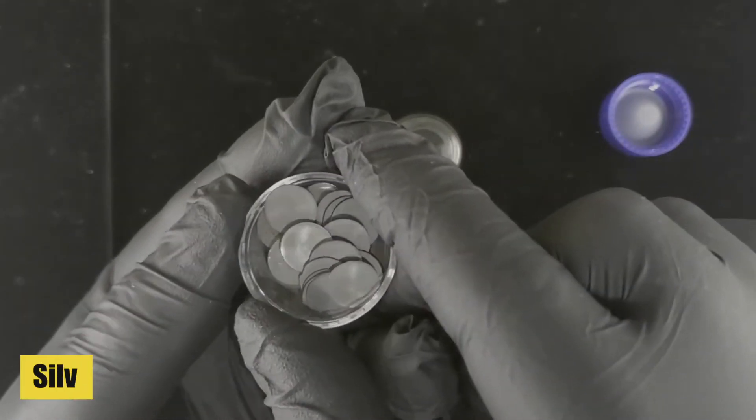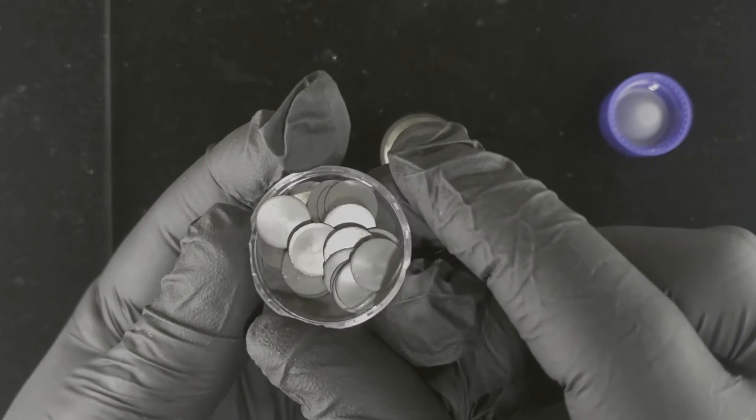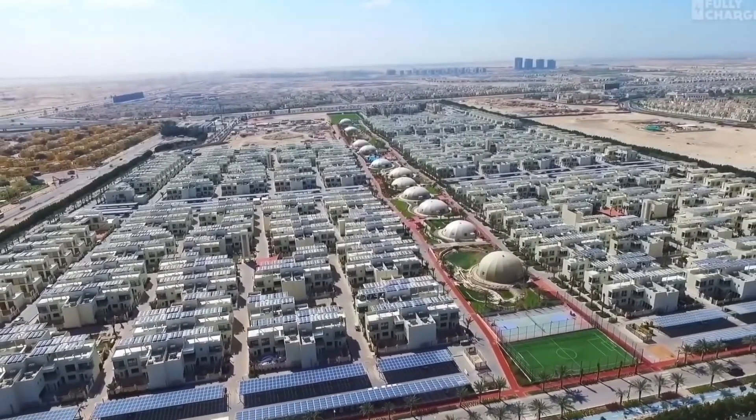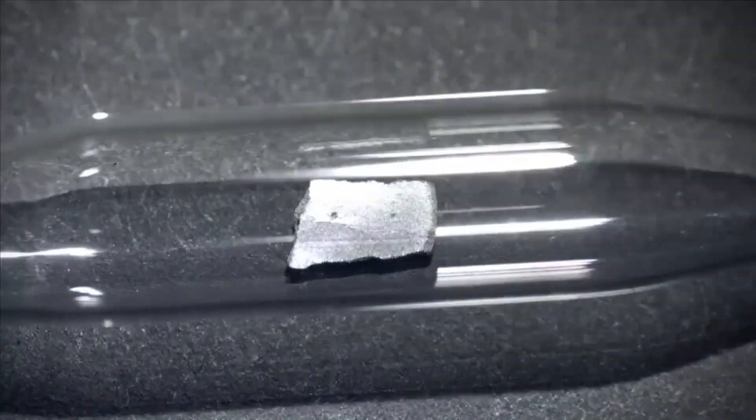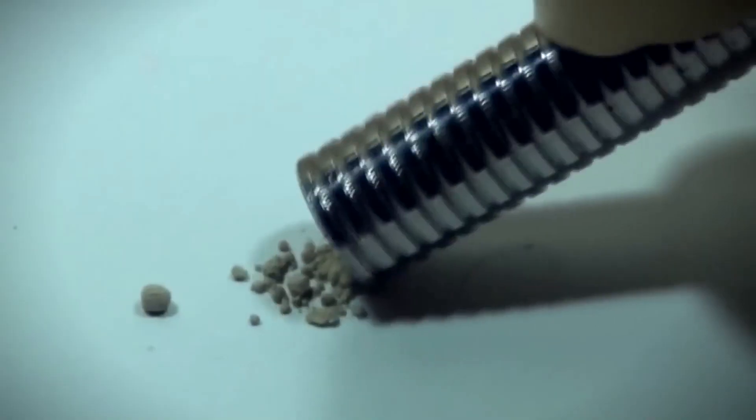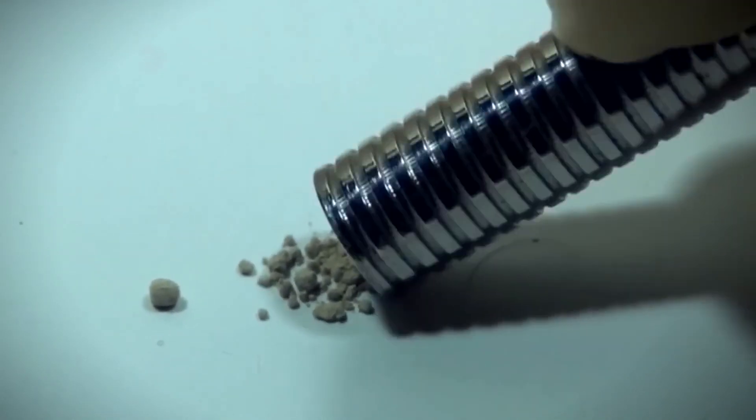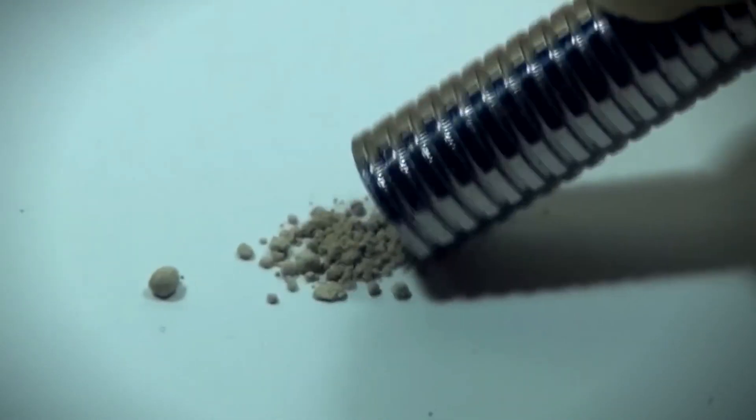Thorium is a silvery white metal that is highly ductile and malleable, making it suitable for various industrial applications. It is relatively soft and can be easily cut with a knife when in its pure form. Thorium is also pyrophoric, meaning it can ignite spontaneously in air when finely divided.